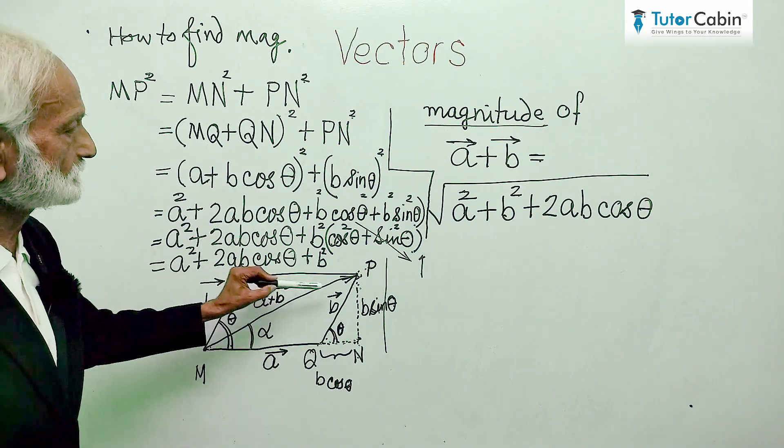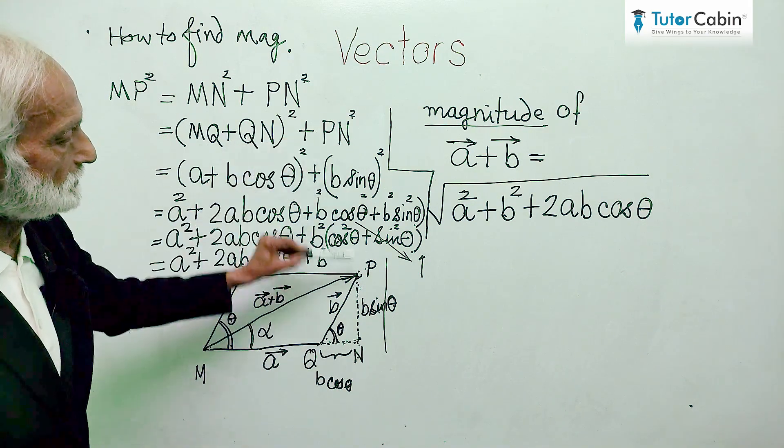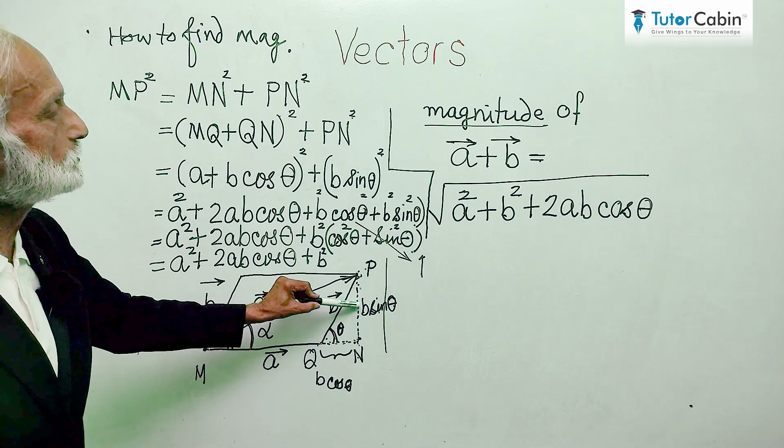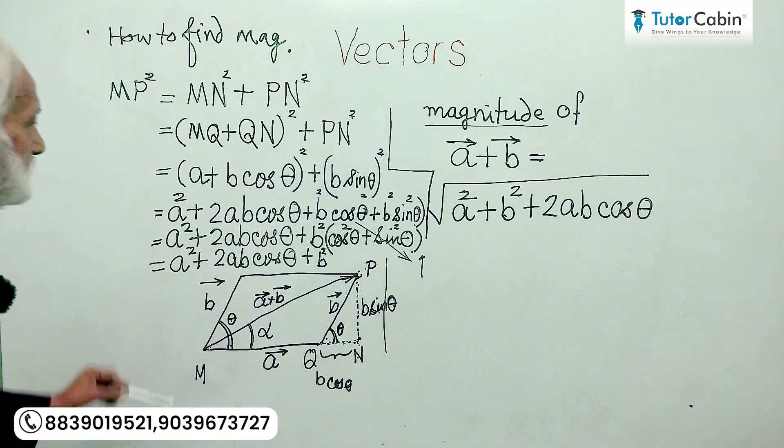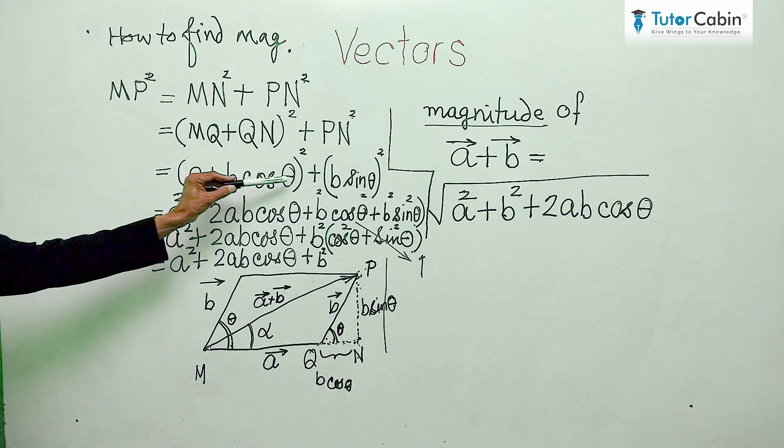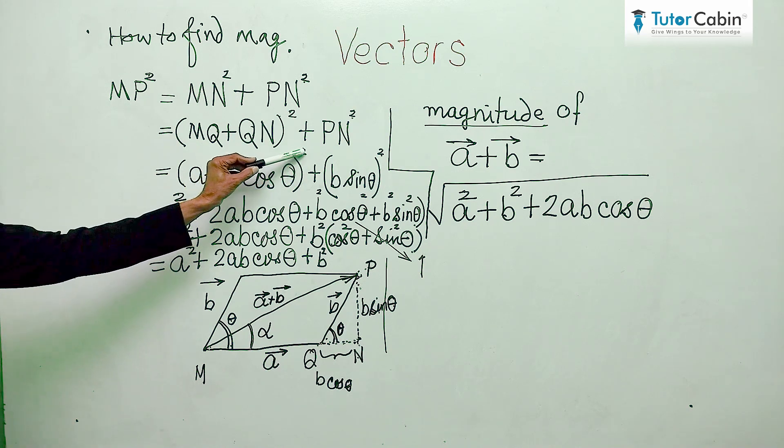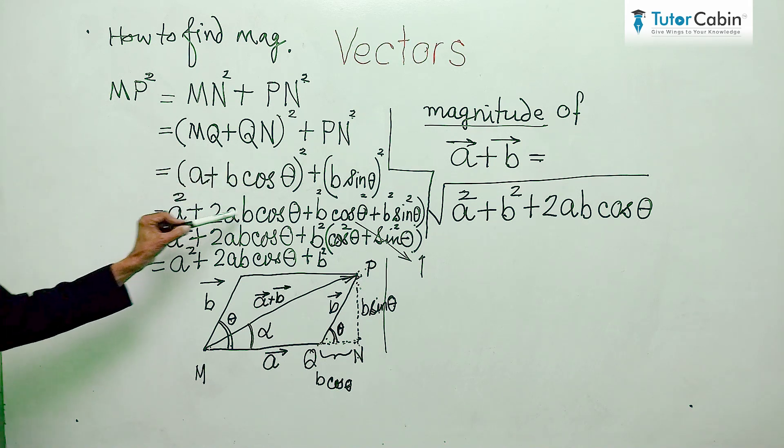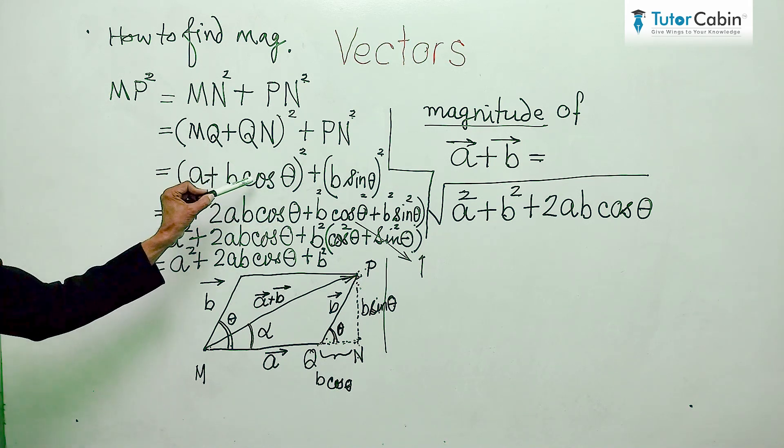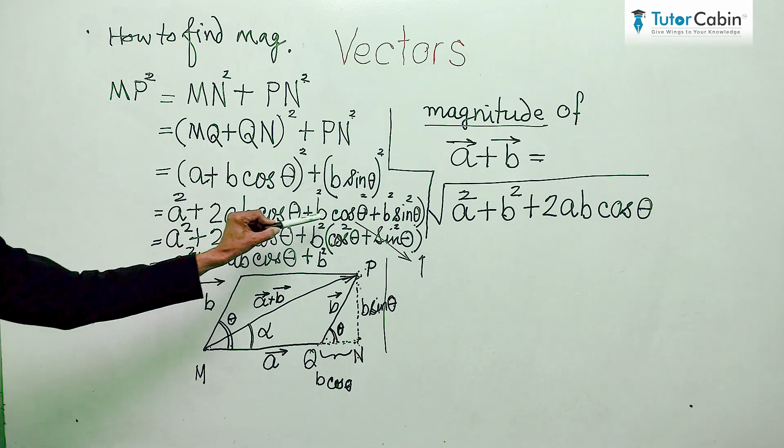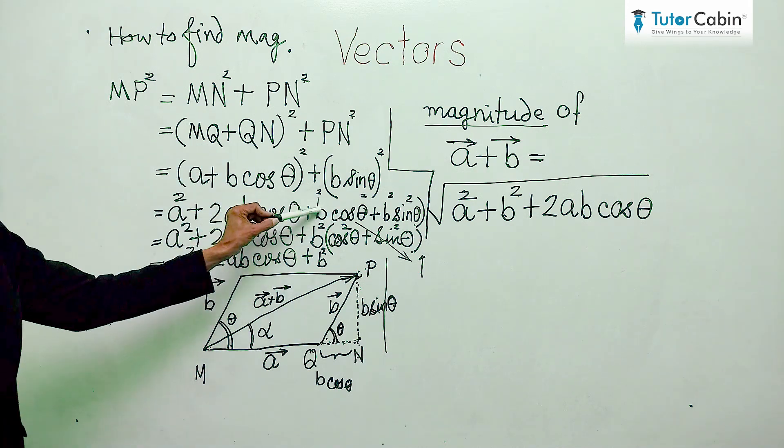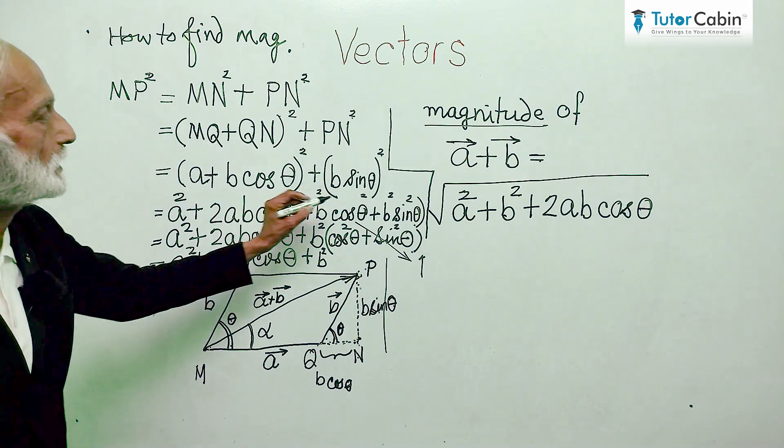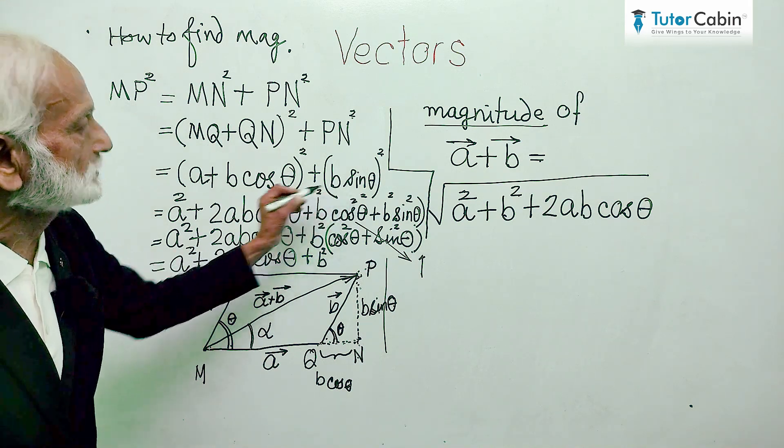So, if we just square it, it will become a square plus 2ab cos theta plus b square cos square theta.